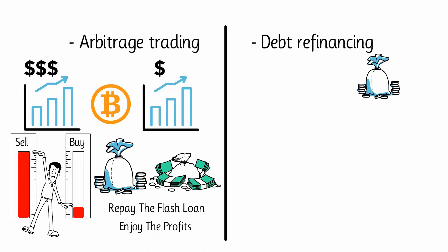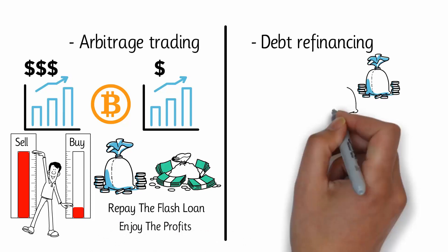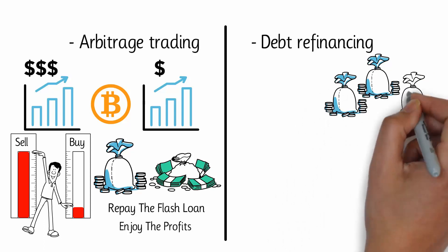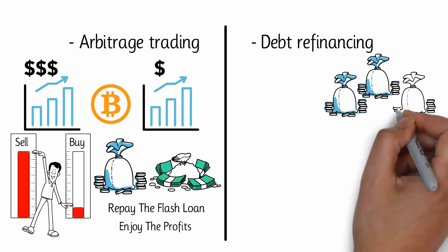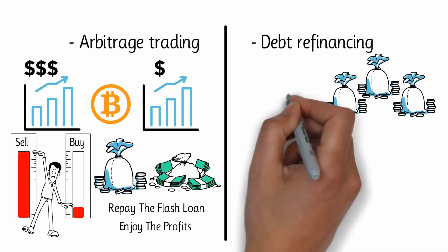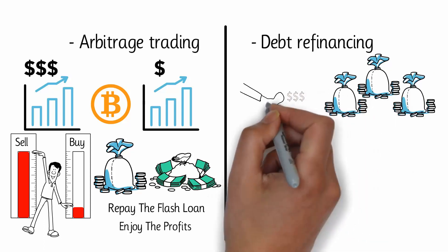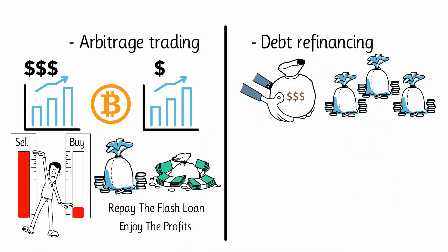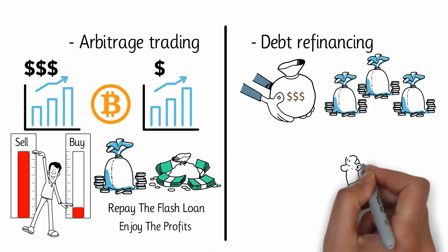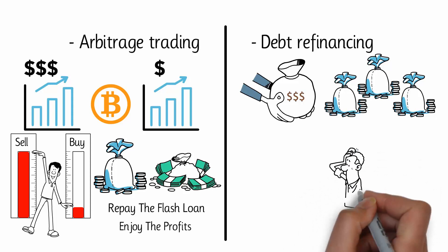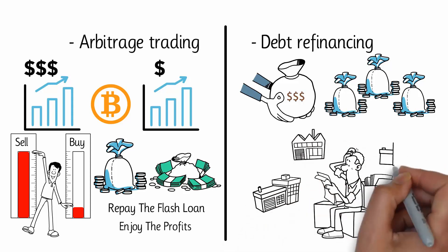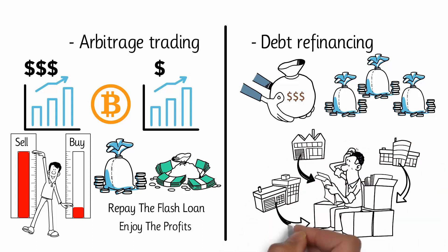In the case of debt refinancing, users can take out flash loans if they have an existing loan. The goal is to pay off a loan in order to take out another loan from a different DeFi platform that offers better interest rates. Essentially, you're profiting from switching between competitive lending platforms.